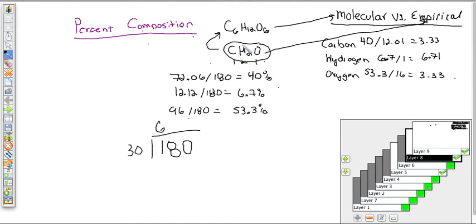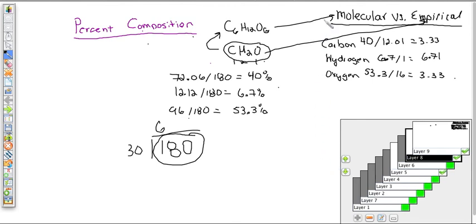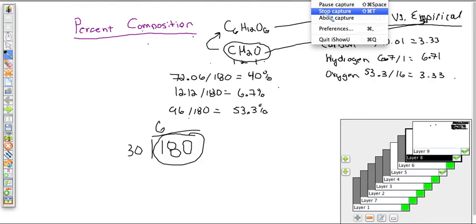That's the difference between molecular and empirical formulas. Often compounds are expressed as empirical formulas, and sometimes we need to find the molecular formula. To solve for molecular, they must give you the actual molar mass — if they don't give you the molar mass, you can only find the empirical formula. Hope that helps and puts you on your way to solving percent composition, molecular vs. empirical problems, and understanding how elements go together.